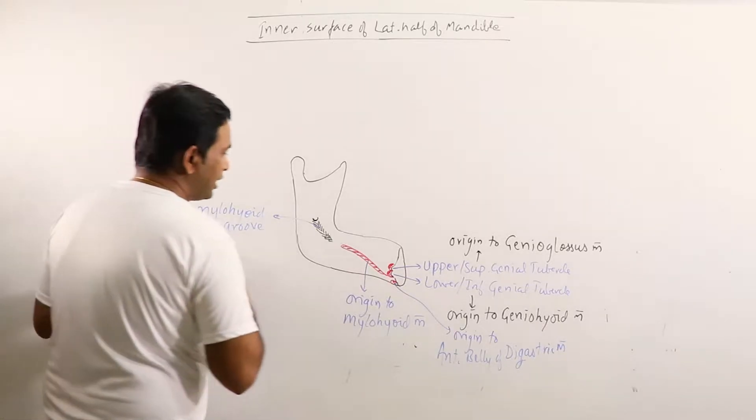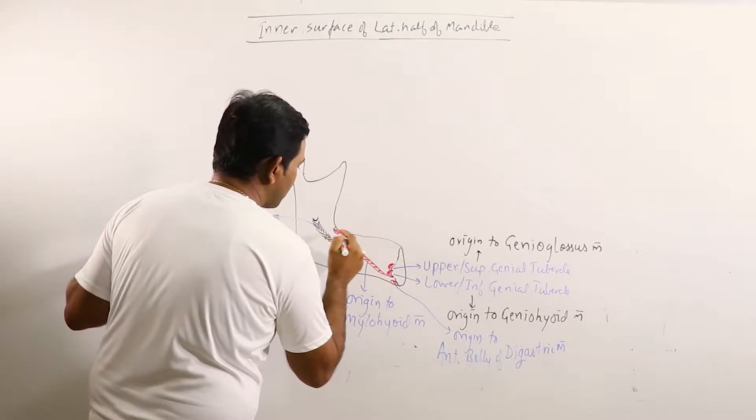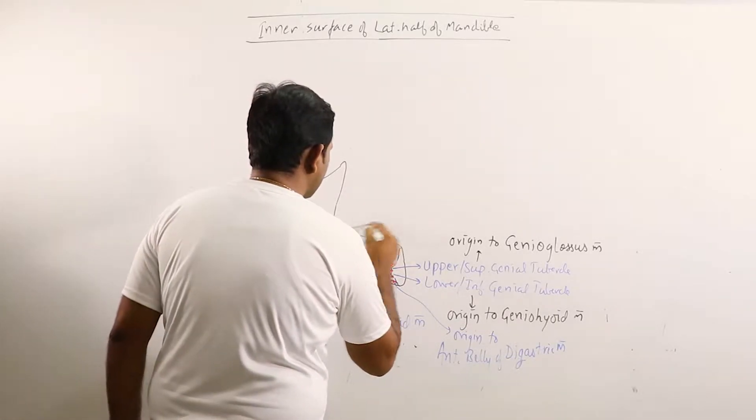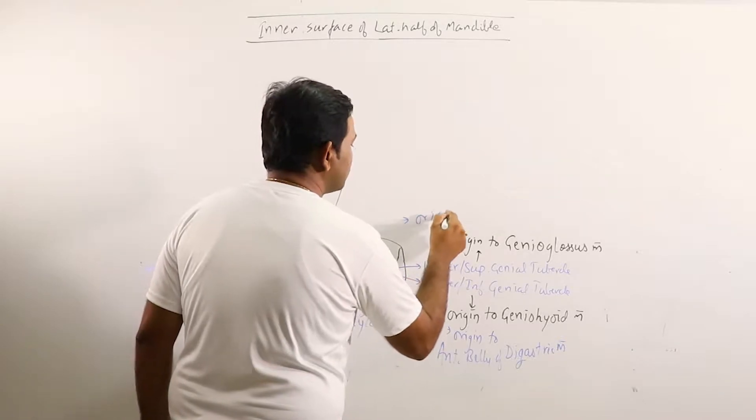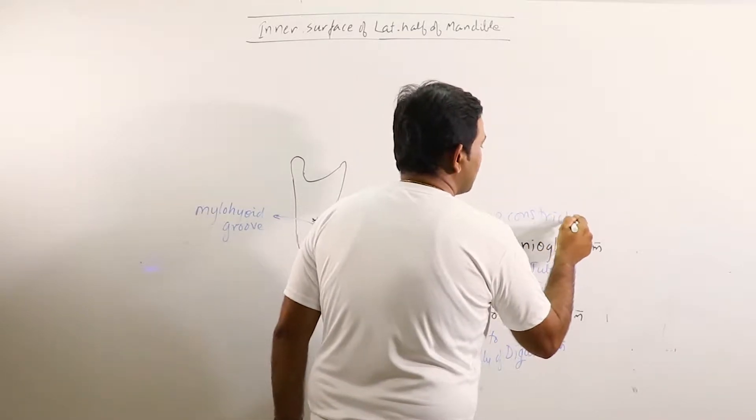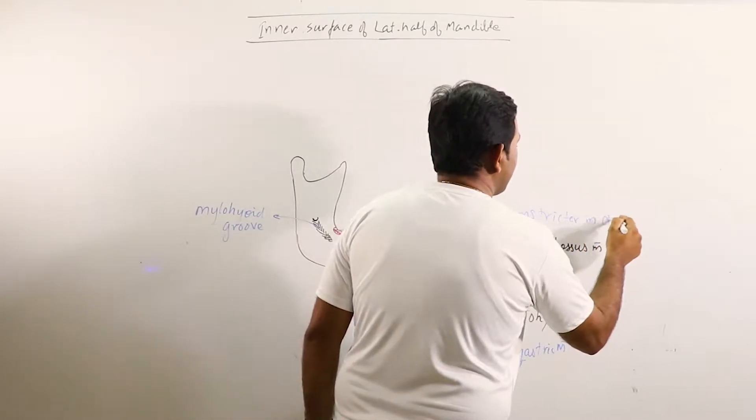Anterior to mylohyoid line, this region gives origin to superior constrictor muscle of pharynx.